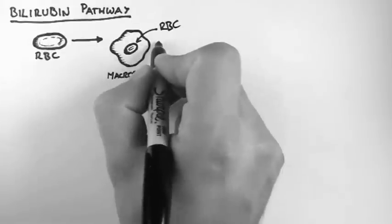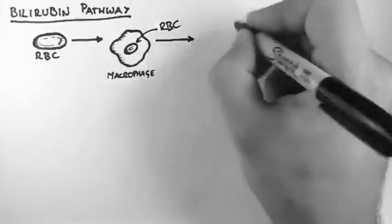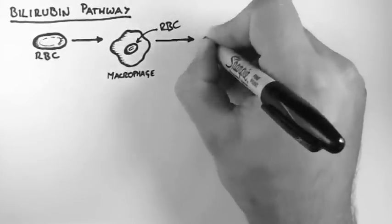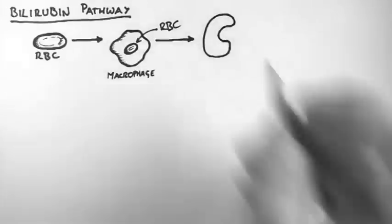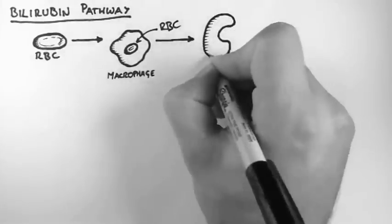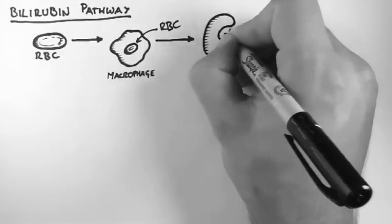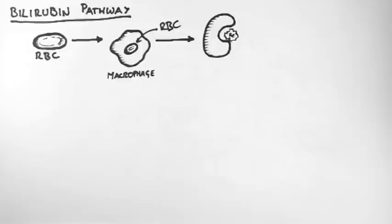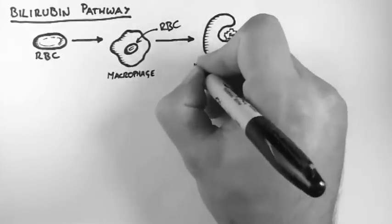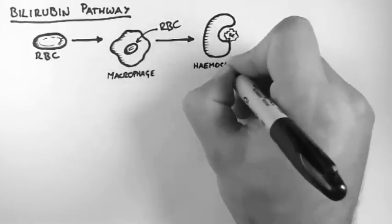Now hemoglobin found in the red blood cell is made up of four subunits, and each of these subunits consists of a protein element called globin and a porphyrin iron complex called heme. This iron is the molecule which carries oxygen through the blood.